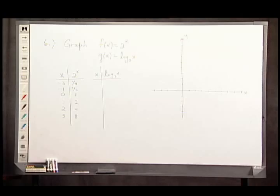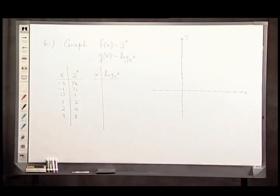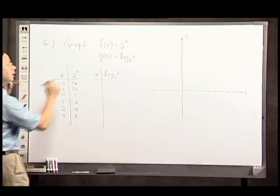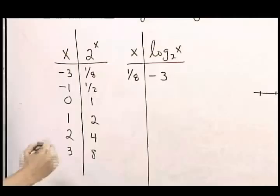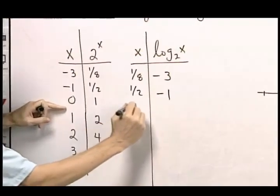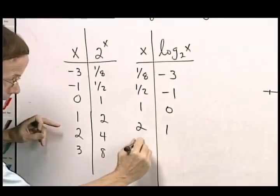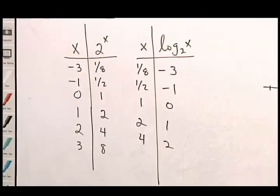And shortly I'm going to graph this, but before I do, I want to exploit the fact that the log function is the inverse. It undoes whatever the original function did. If the original function turned a negative 3 into a 1 eighth, the inverse function will turn a 1 eighth into a negative 3, and so on. The 1 half will be turned back into the negative 1, the 1 back into the 0. Notice, not a particularly difficult problem once you realize what the inverse function does.